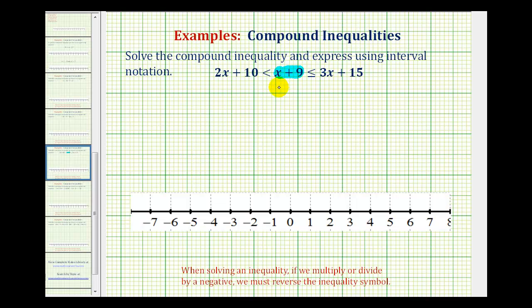To solve this compound inequality, we'll have two separate inequalities connected by the word 'and.' Then we'll solve each of the inequalities, graph them both on the number line, and determine which interval satisfies both inequalities. Starting with x plus nine and reading from right to left,